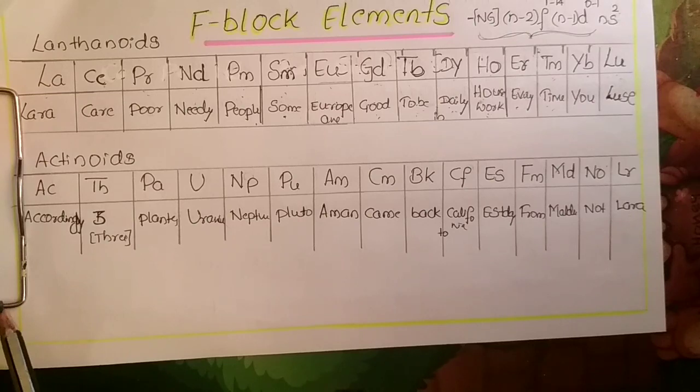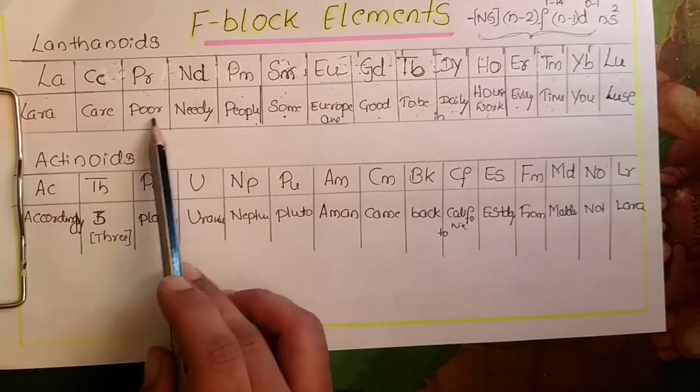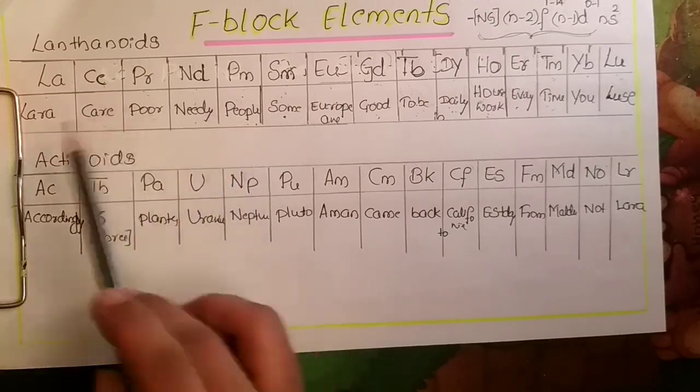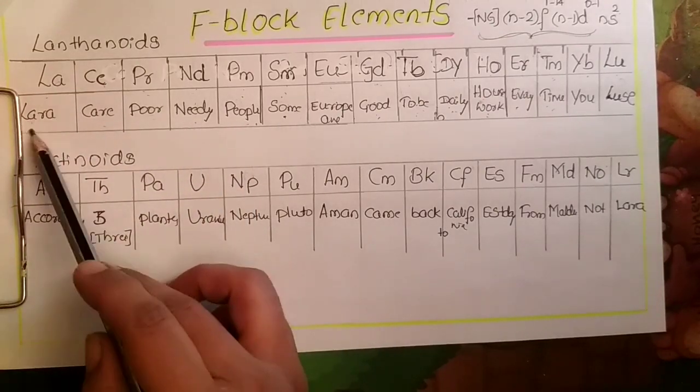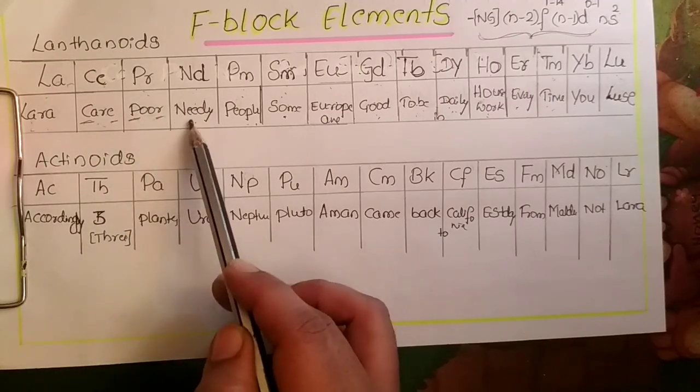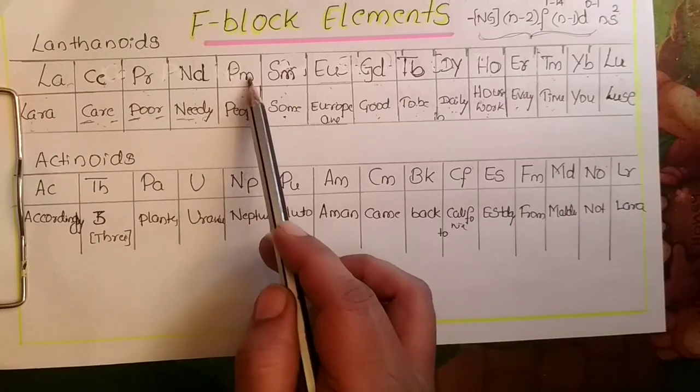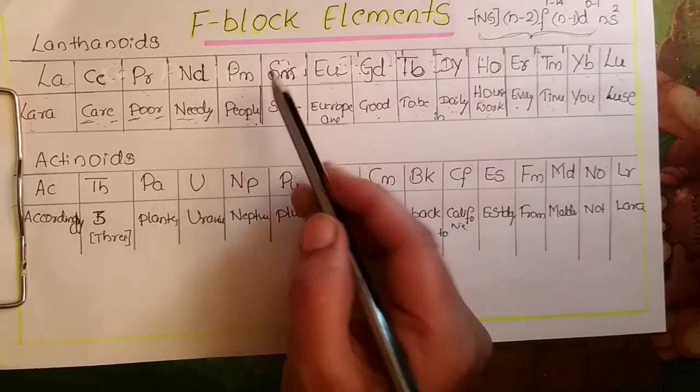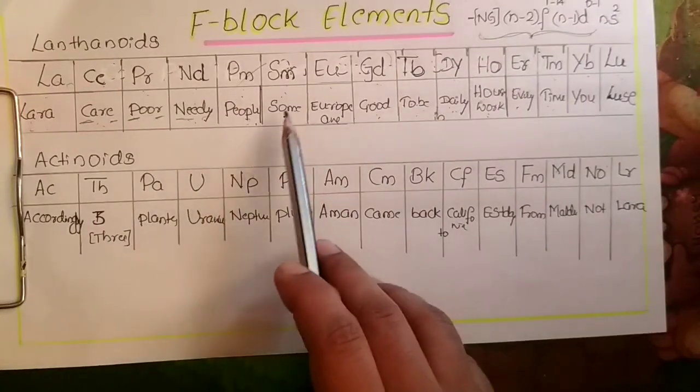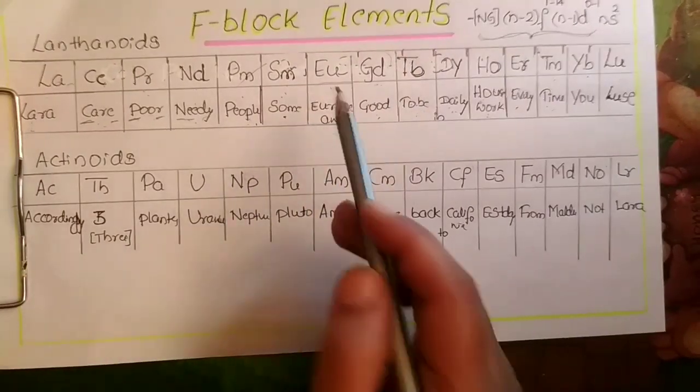I have split it into sentences. Lara care poor needy people. You have to concentrate - for Pm I have taken only people, this is one word. Then comes: some Europeans...